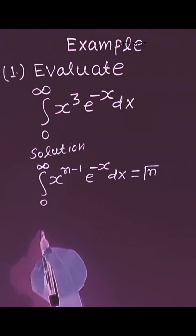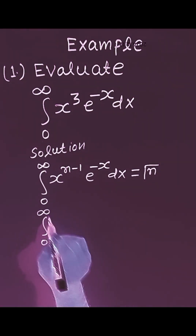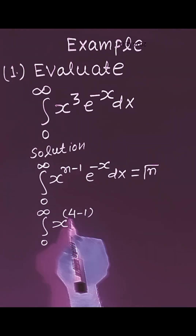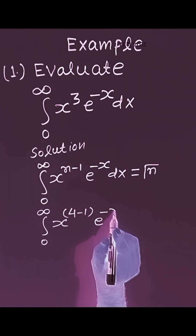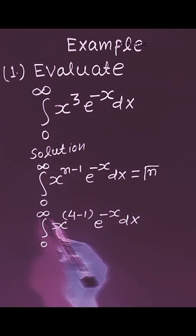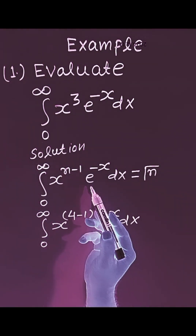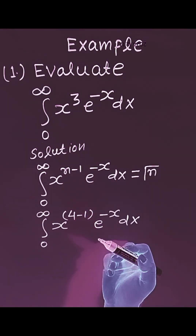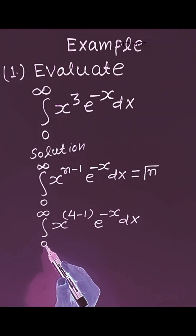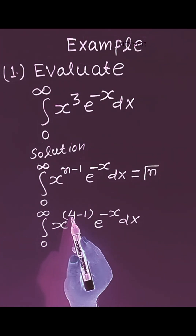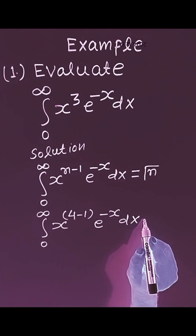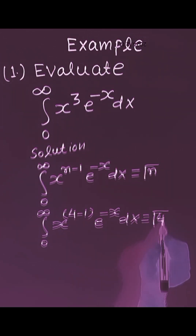Now we will write the given integral as the integral from 0 to infinity of x raised to the power 4 minus 1 times e raised to the power minus x dx. So by using the gamma function formula — the integral from 0 to infinity of x raised to the power n minus 1 times e raised to the power minus x dx equals gamma n — this integral will be equal to gamma 4.